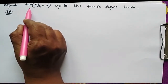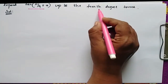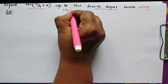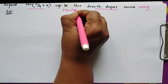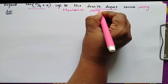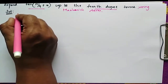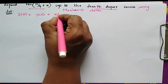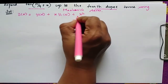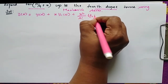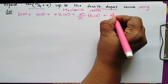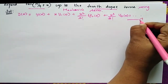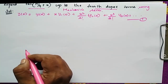Expand tan(π/4 + x) up to 4th degree terms using Maclaurin series. The Maclaurin series is: y(x) = y(0) + x·y1(0) + (x²/2!)·y2(0) + (x³/3!)·y3(0) + ... This is equation 1.